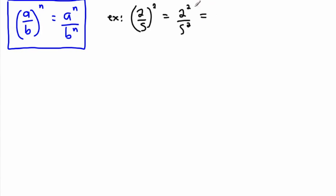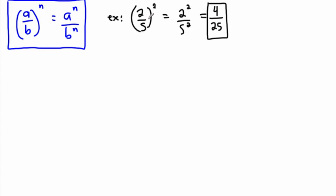So that means 2 to the power of 2 is 4, and 5 to the power of 2 is 5 times 5, which is 25. I'd have to reduce my fraction if I can, but 25 doesn't divide by 4 or 2 or anything, so this is it.